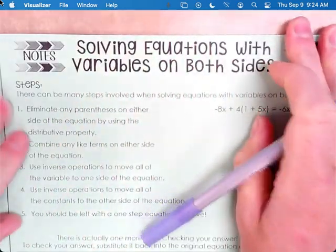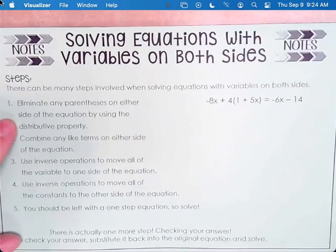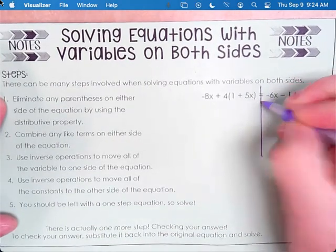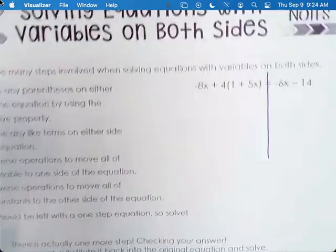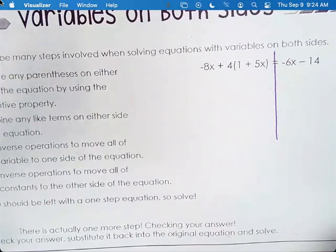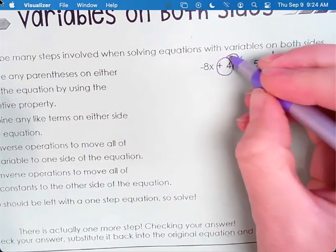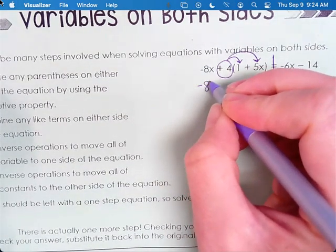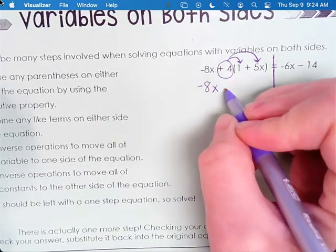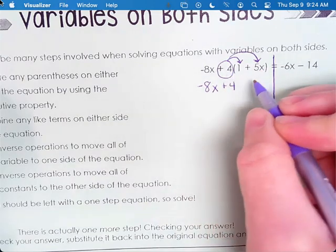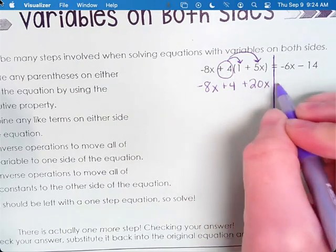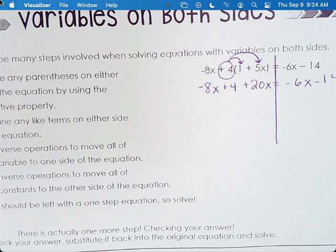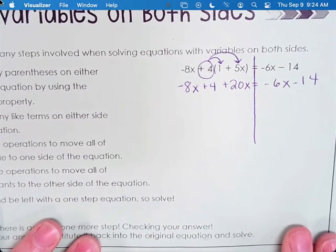So there can be many steps involved when solving equations with variables on both sides. So step one, eliminate any parentheses on either side of the equation by using the distributive property. So we're going to solve this. We're going to follow it step by step. So let's draw a line down the equal side. So first step would be to get rid of the parentheses. So in this case, we are going to distribute the positive 4. So we have negative 8x. 4 times 1 is 4. 4 times 5x is 20x. So that is step one.